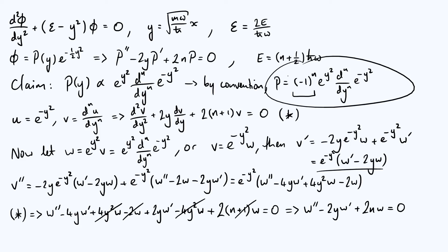Rodriguez's formula gives a convenient way of deriving all the coefficients of your polynomials, and one of the reasons it's more useful than the power series solution derived in the last video is that it really helps when you're trying to normalize your wave functions in the quantum harmonic oscillator. We'll see in the next and final video on the quantum harmonic oscillator how exactly that works. Thanks for watching and see you again soon.